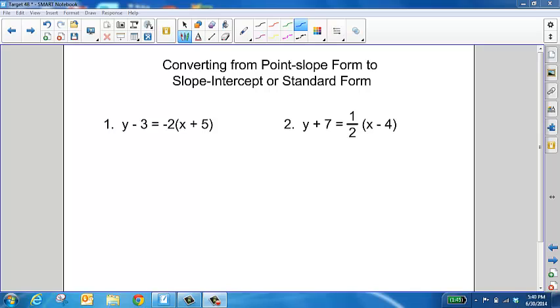So we're going to convert both of these equations into slope-intercept and to standard form. Looking at number 1, the first thing we're going to do is distribute in that negative 2. And then, to get this into slope-intercept, the only thing we need to do is add 3 to both sides so that we have that y isolated.